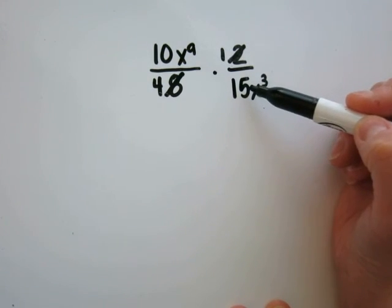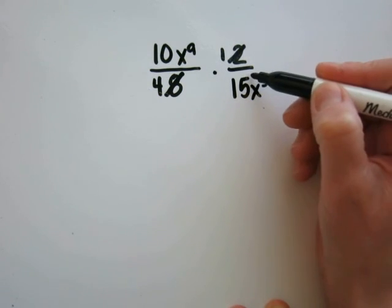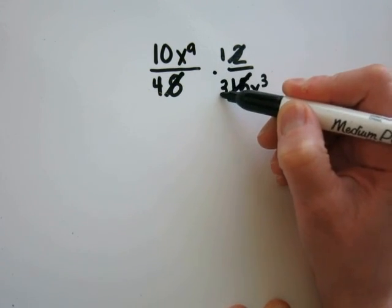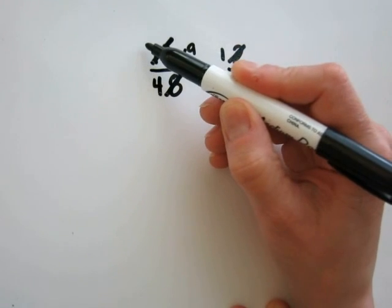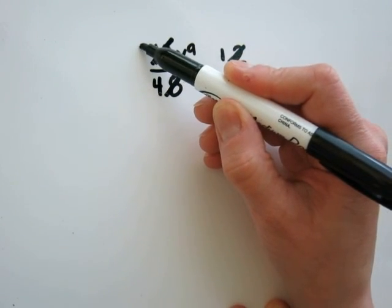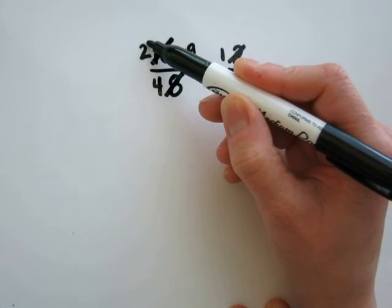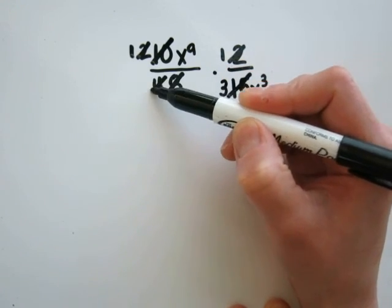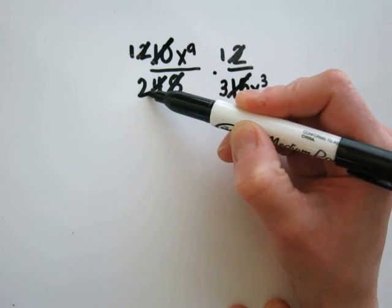10 and 15 are both divisible by 5. 15 divided by 5 is 3, and 10 divided by 5 is 2. 2 and 4 are both divisible by 2, so my 2 cancels out to become 1, and 4 divided by 2 is 2.